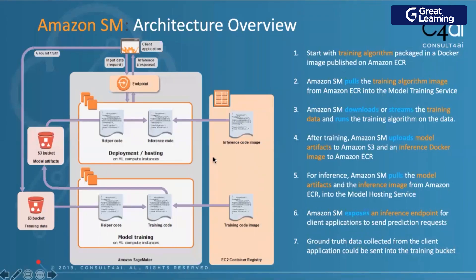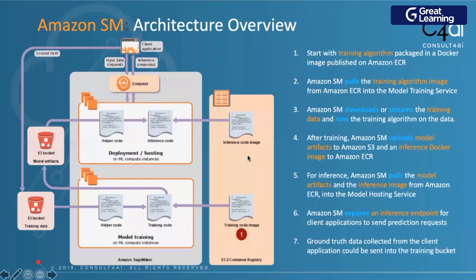Those algorithms reside inside Elastic Container Registry, or ECR. So there is an ECR container registry where your algorithm is kept inside a Docker container. Now, the moment you kick-start your training process, you bring in your container — think of the XGBoost algorithm available inside a Docker container. You bring that into your SageMaker session. That's the first step. Once done, you start with your training algorithm backed into a Docker image, published into the registry. Now, visualize that gray box as your SageMaker session — SageMaker pulled the algorithm inside the session.